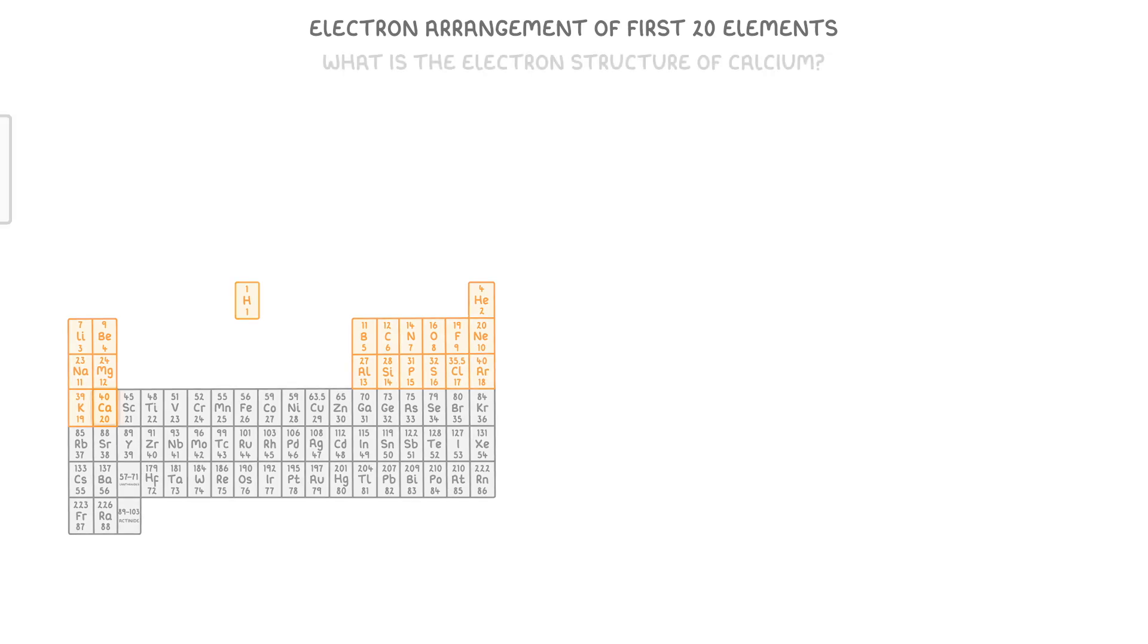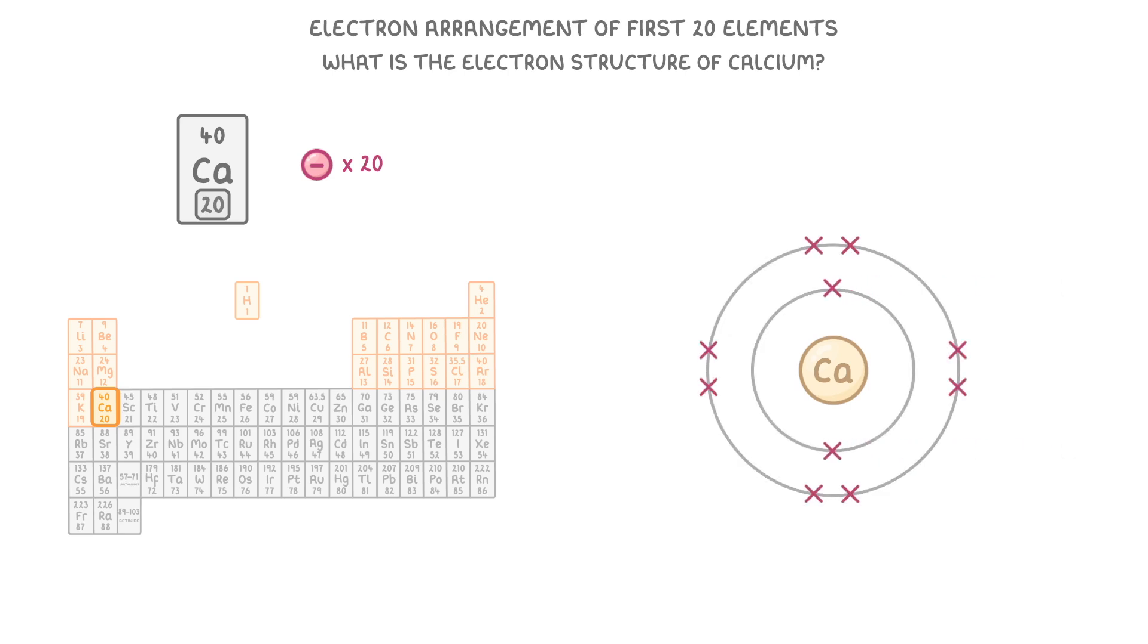What if we were asked to do the same for calcium? Well, calcium has an atomic number of 20, so it must have 20 electrons. Which means working out from our nucleus, we have 2 in the first shell, 8 in the second, 8 in the third, and 2 in the fourth.